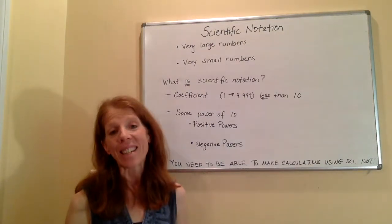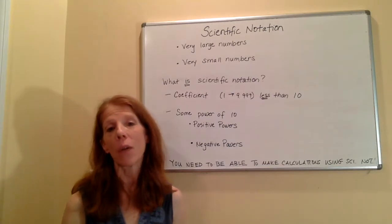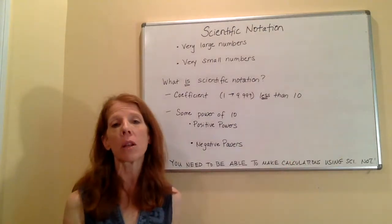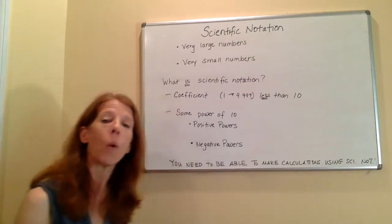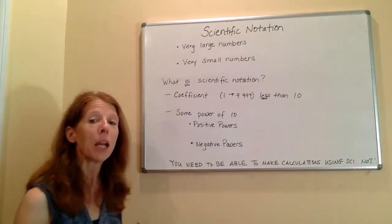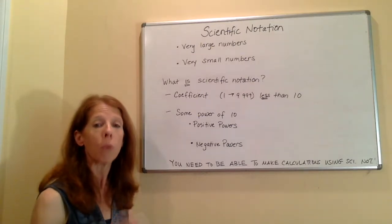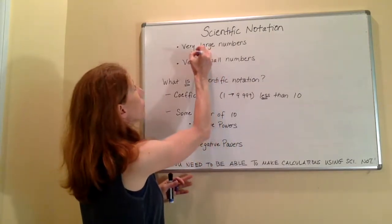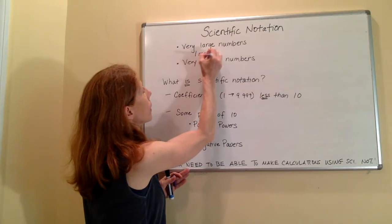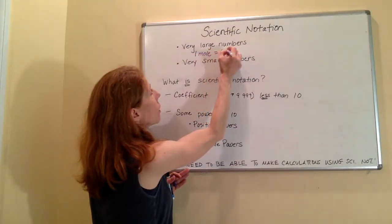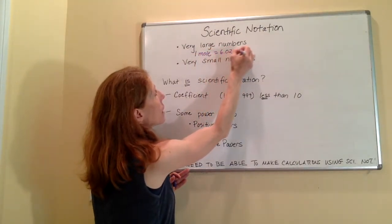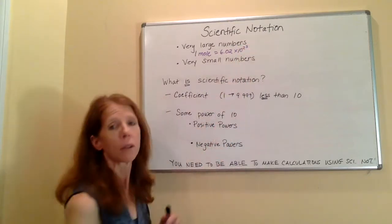The reality is that in chemistry, we deal with a lot of very large numbers and a lot of very, very small numbers. For example, one number that you are going to become extraordinarily familiar with is one mole. And one mole is equal to 6.02 times 10 to the 23rd.